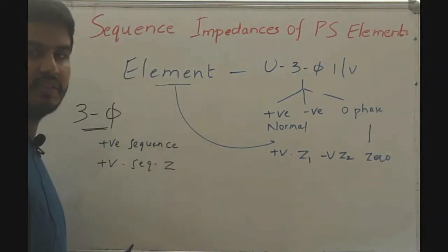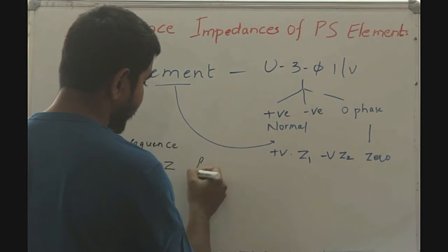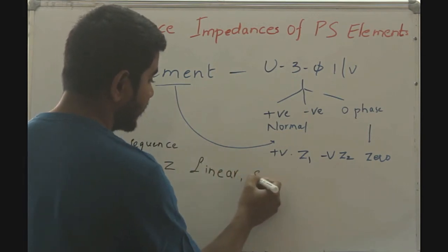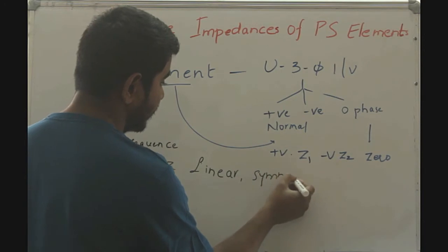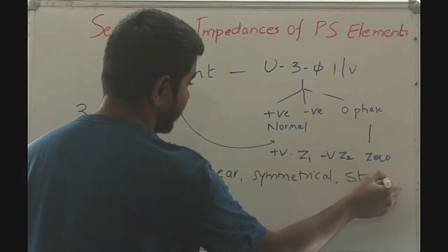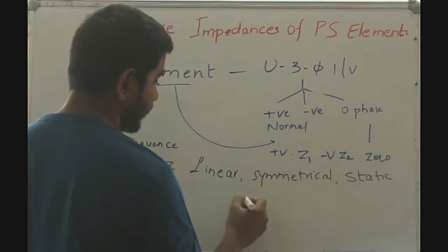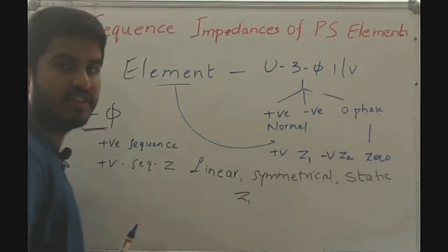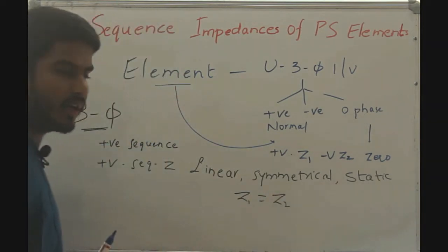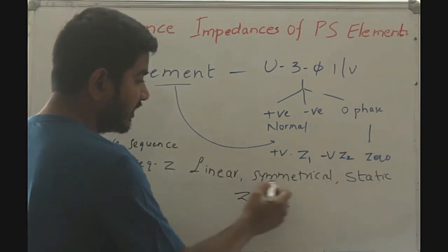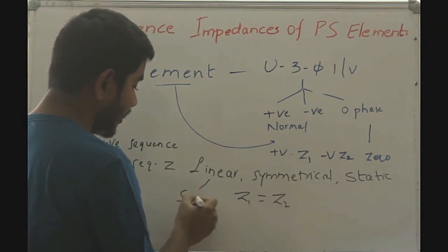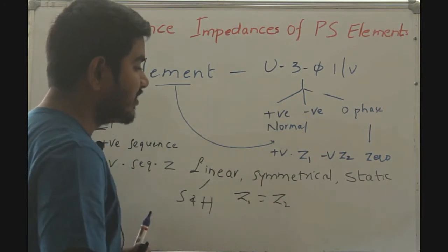For a linear, symmetrical, and static circuit, the positive sequence impedance will be equal to the negative sequence impedance. Linear means the circuit must follow the principle of superposition and the homogeneous principle. Symmetrical means if you look at the circuit from top to bottom or left to right, it must appear symmetrical.